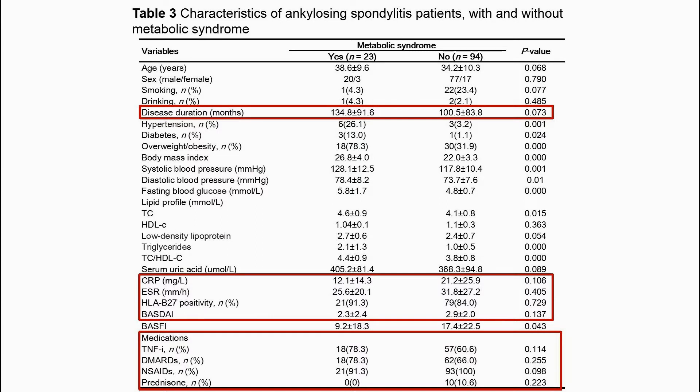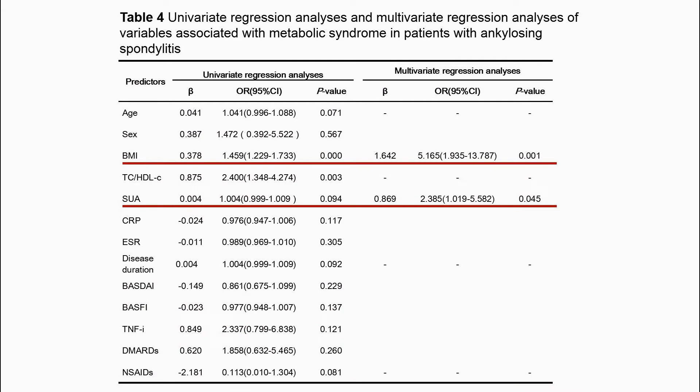AS patients with and without MetS had no distinct differences in disease duration, medication usage, disease activity, or biomarkers of inflammation. Multivariable logistic regression analysis showed that hyperuricemia and high body mass index were independent factors for MetS in AS patients.